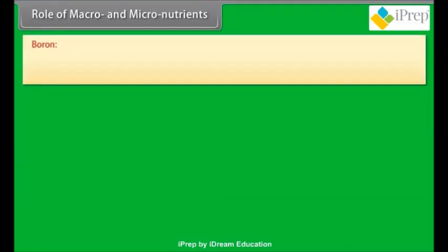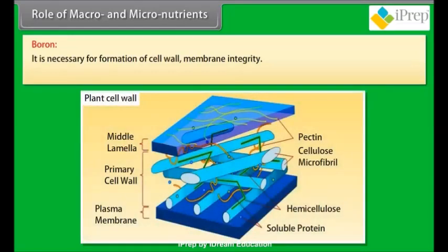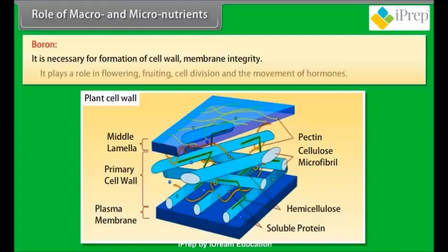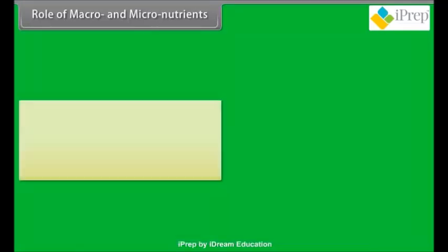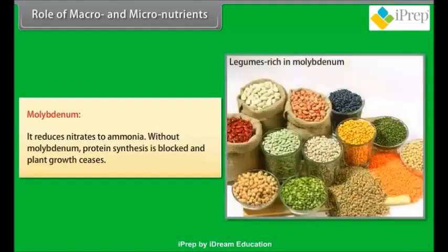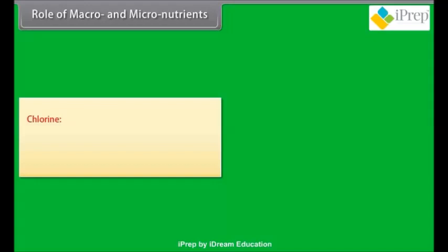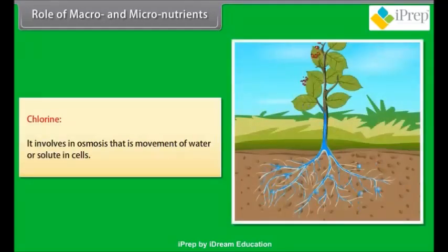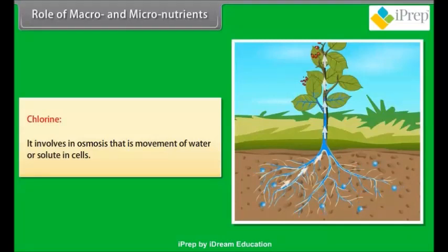Boron: it is necessary for formation of cell wall and membrane integrity. It plays a role in flowering, fruiting, cell division, and the movement of hormones. Molybdenum: it reduces nitrates to ammonia; without molybdenum, protein synthesis is blocked and plant growth ceases. Chlorine: it is involved in osmosis — that is, the movement of water or solutes in cells.